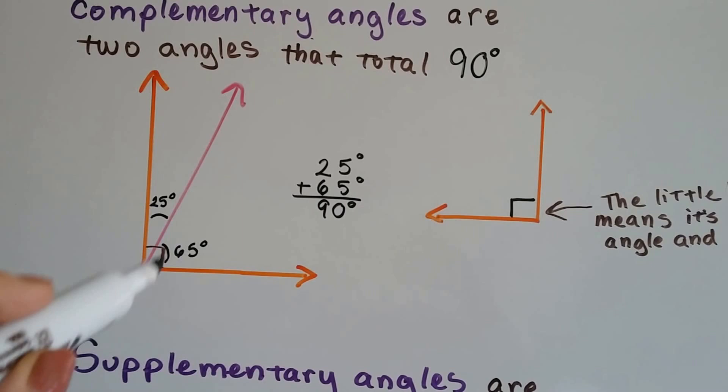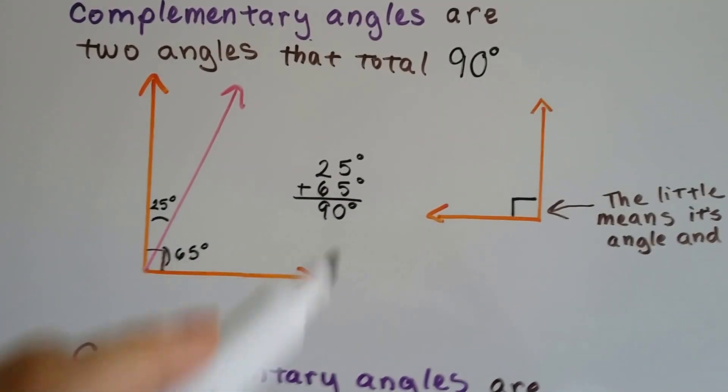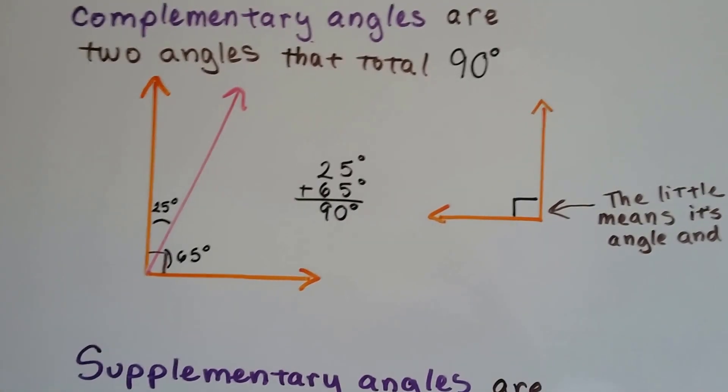It's got the little box here, so this angle and this angle together, total 90 degrees, they're complementary angles.